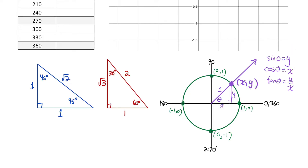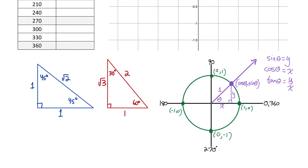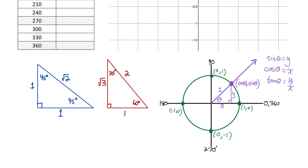So the x-y point on the unit circle can be replaced with cosine theta, sine theta. The y-coordinates on the unit circle correspond to the sine ratios of each angle of rotation, and the x-coordinates correspond to the cosine ratio of each angle.